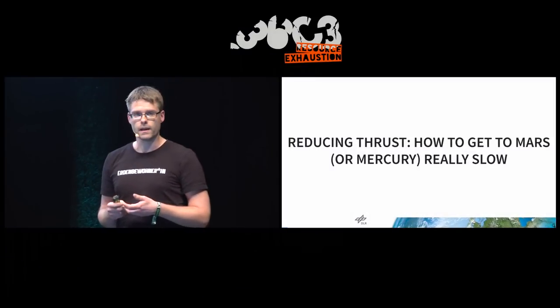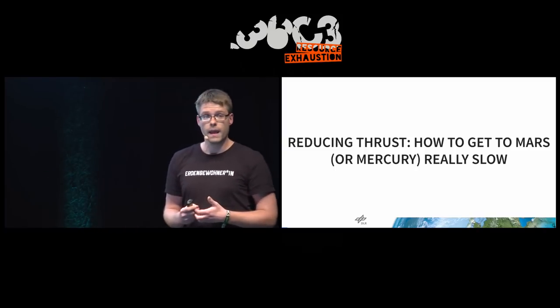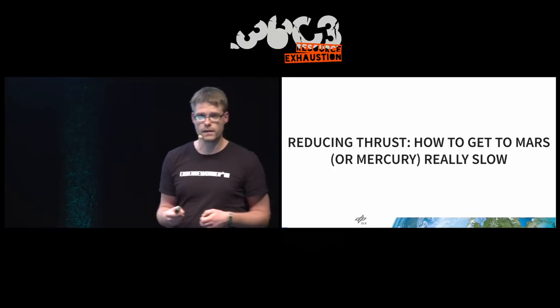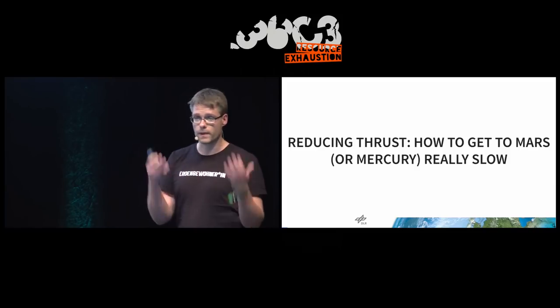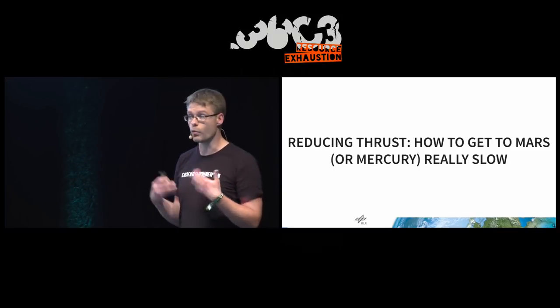First of all, I have to apologize because I kind of cheated a little bit in the title. The accurate title would have been 'Reducing thrust: How to get to Mars or maybe Mercury really slow.' The reason for this is that I will actually use Mercury as an example quite a few times. Also, we will not be able to actually get rid of all the maneuvers that we want to do.